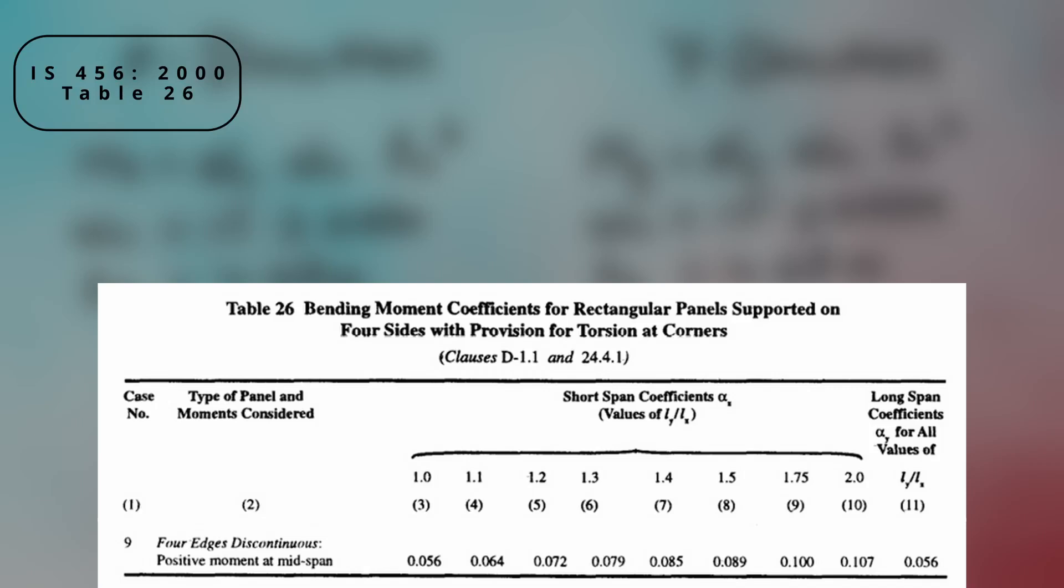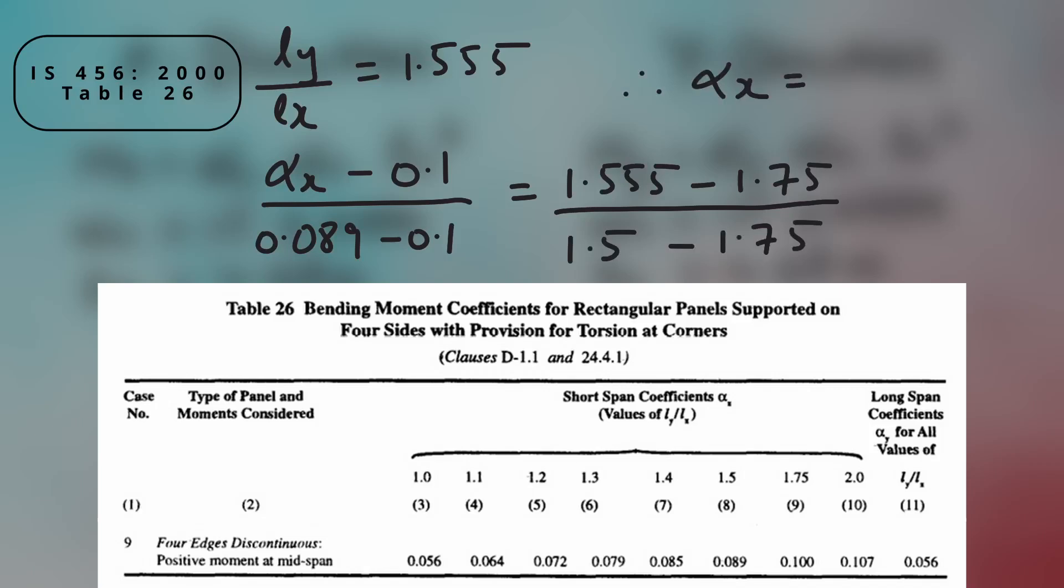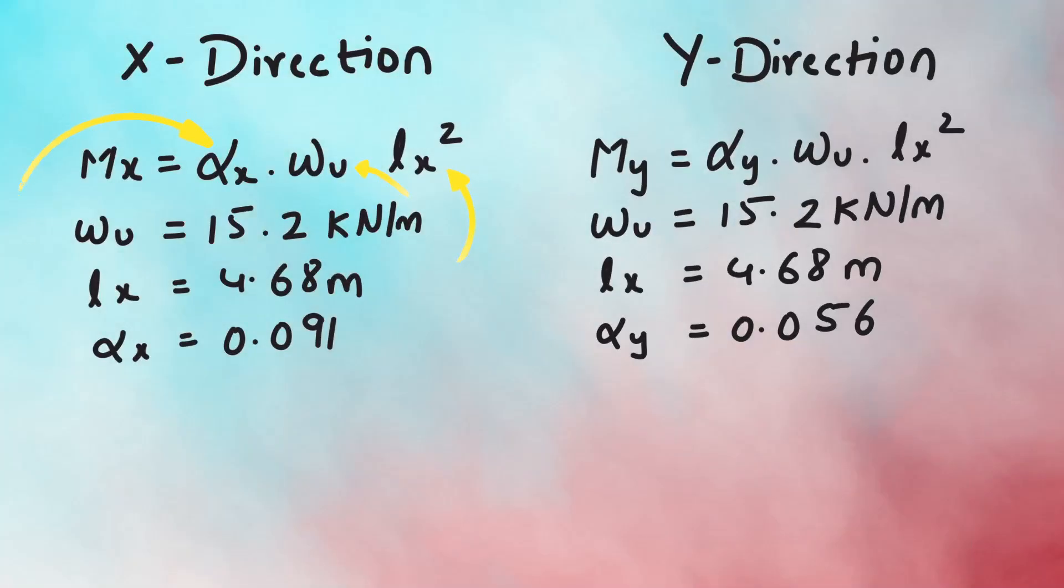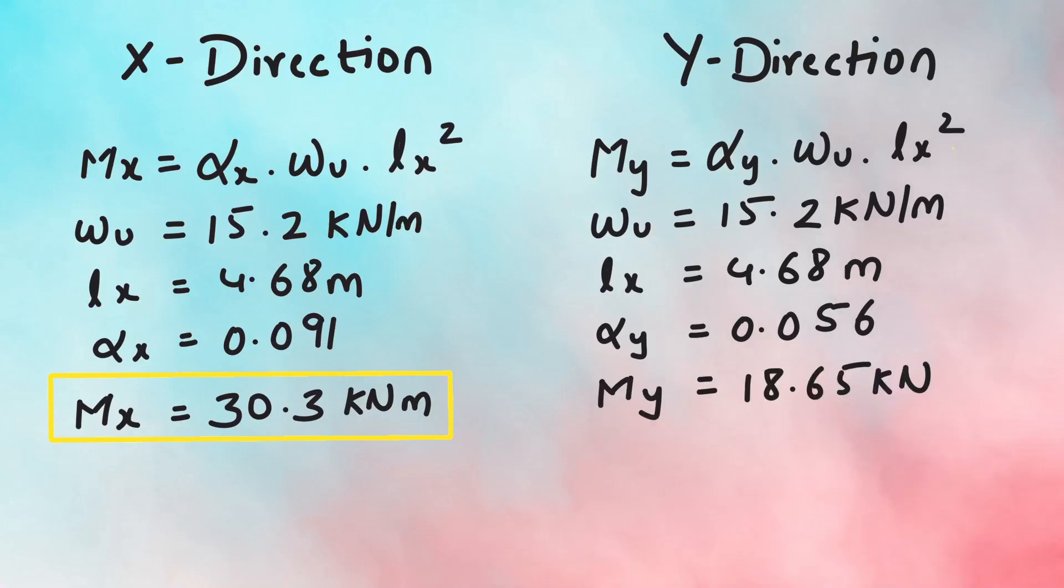So, in our case, the ratio of Ly by Lx is 1.555, which is between 1.5 and 1.75. Interpolating between these two values and solving gives alpha X as 0.091. Next, alpha Y for case 9 is directly given as 0.056. Substituting the values of alpha X and alpha Y in their respective equations give the moment for X direction as 30.3 kNm and moment for Y direction as 18.65 kNm.